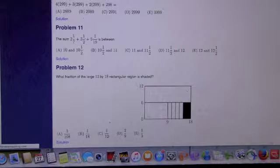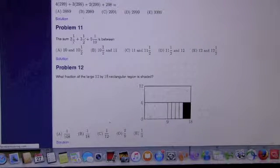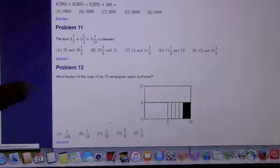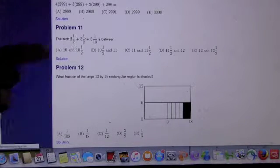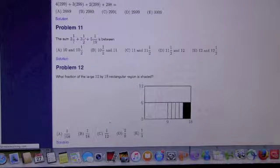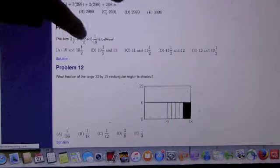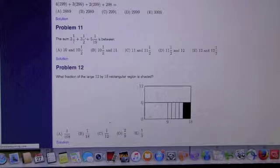We can already eliminate A, because it says between 10 and 10 1/2. We already have the 10, and then we already have the 1/2, and then we have more than that. But these two together aren't going to be more than 1/2, because they're both less than 1/2. But they could still be more than 1/2 together. So that's tricky.